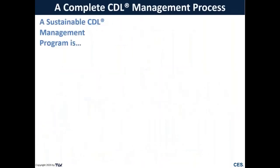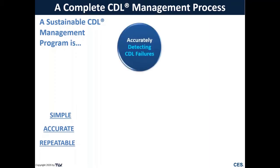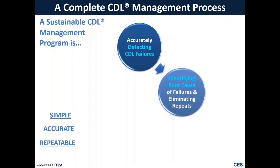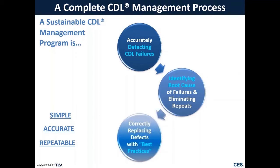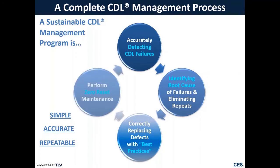What should a CDL management program look like? First, it needs to be simple, accurate, and most importantly, repeatable — a program, not just a one-time survey. It starts with accurately detecting CDL failures, not just steam trap failures, identifying the root cause and eliminating it. Ultimately, replacing defects with best practices — best practice steam traps or corrected piping — and performing what we call zero reset maintenance, or ZRM, resetting your failure state to zero so ideally 100% of your steam traps and CDLs are properly functioning.